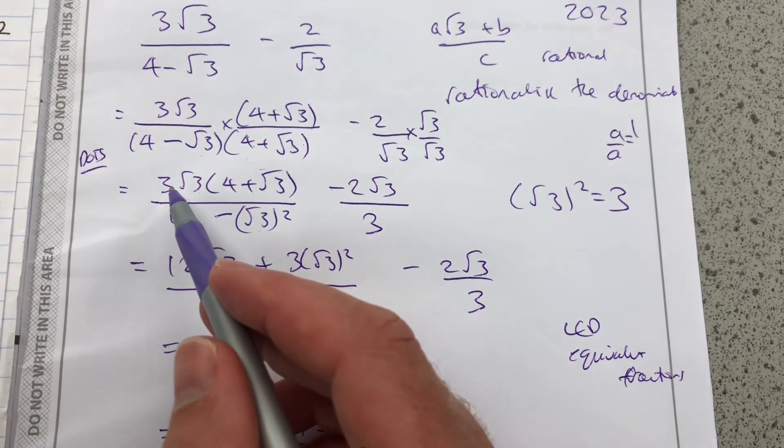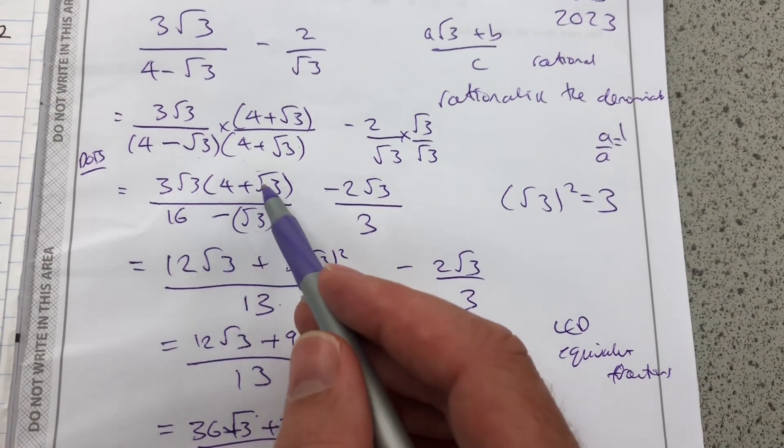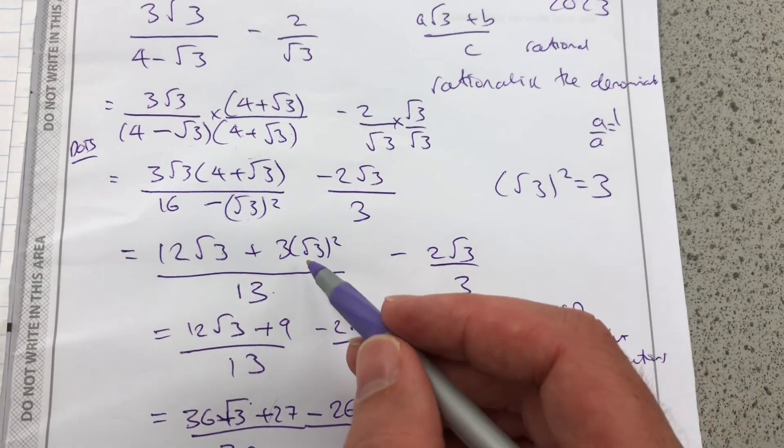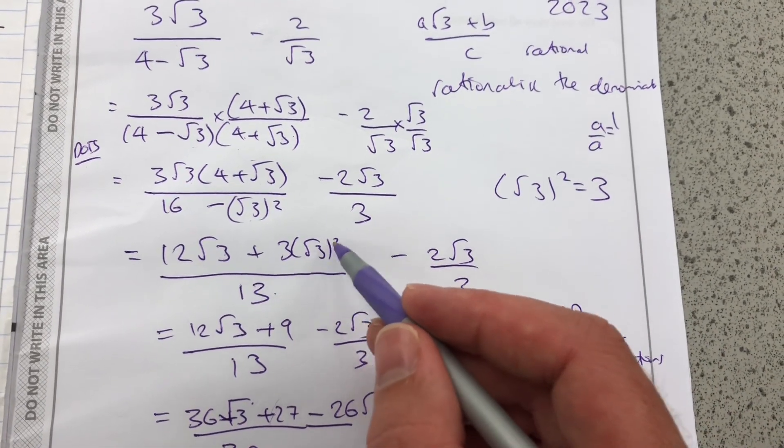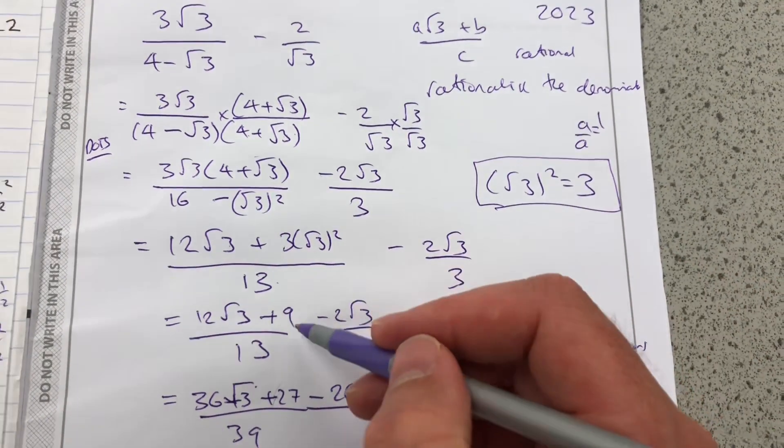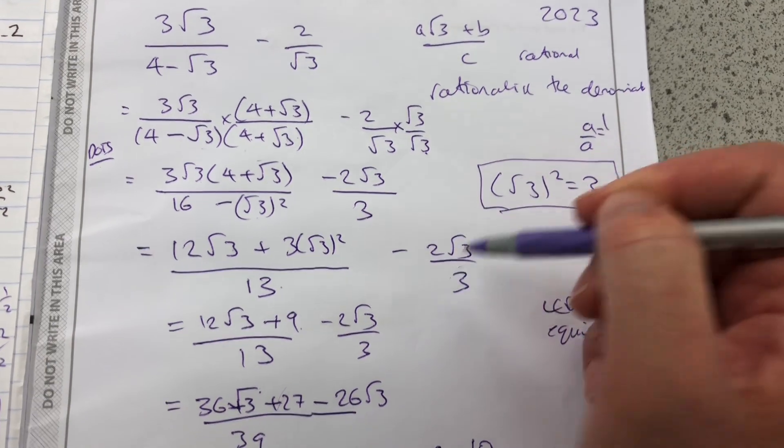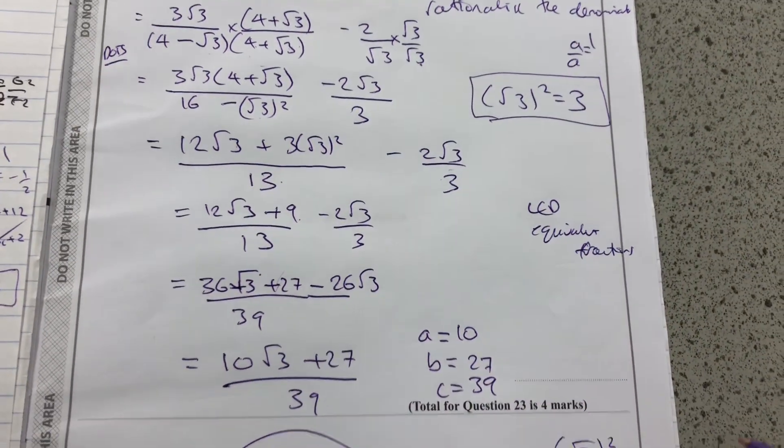And then the numerator. 4 times 3 is 12, keep that root 3. But the 3 times root 3 times root 3 is going to give me 3 times root 3 squared. As we said, root 3 squared is 3, so that's 3 times 3 which is 9. Here I've multiplied by root 3 over root 3 to get 3, and it all simplifies to that.